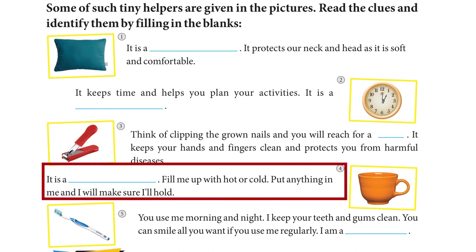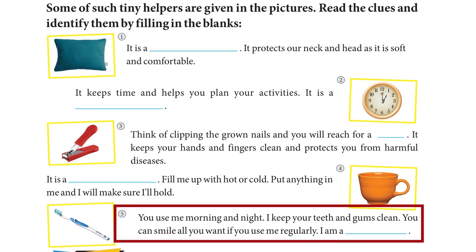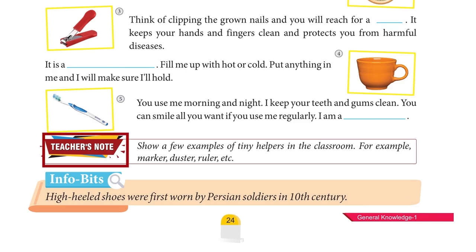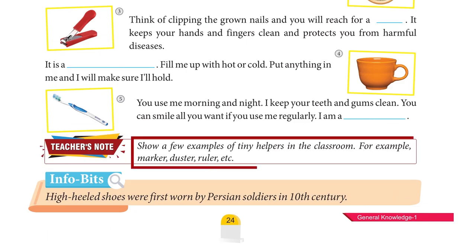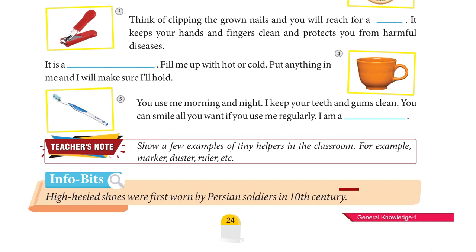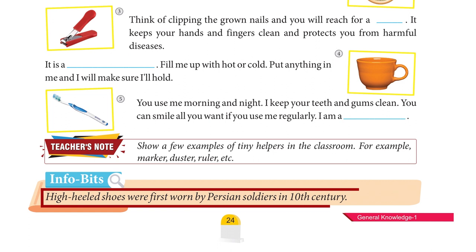A nail cutter keeps your hands and fingers clean and protects you from harmful diseases. A coffee mug — fill it up with hot or cold, put anything in it and it will hold. A toothbrush — use it morning and night; it keeps your teeth and gums clean, and you can smile all you want if you use it regularly. Teacher's Note: Show examples of tiny helpers in the classroom — marker, duster, ruler. Info Bits: High-heeled shoes were first worn by Persian soldiers in the 10th century.